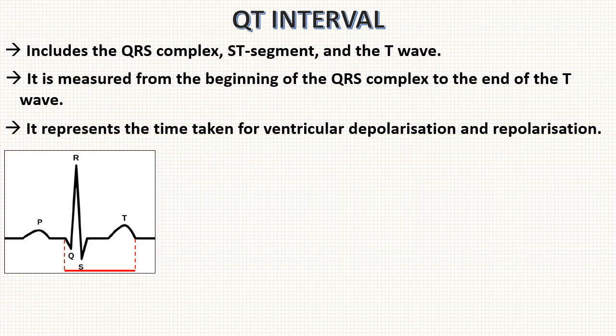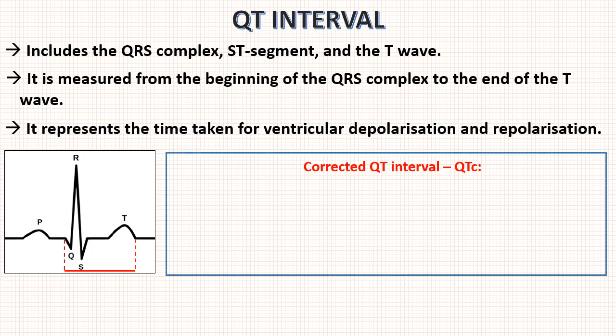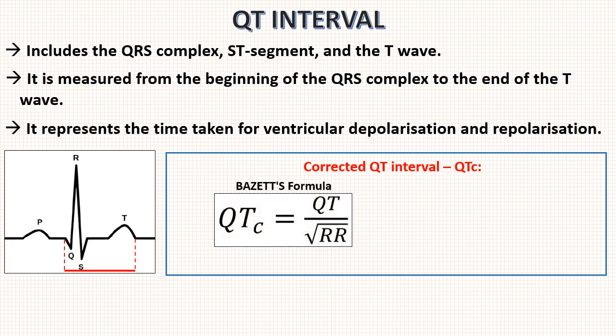As the QT interval alters depending upon the heart rate, we should always calculate corrected QT interval which is also called as QTc. There are various formulas to calculate QTc. But the commonly used is Bazett formula which is equal to measured QT interval divided by square root of RR interval. It is standard formula to calculate QT interval.